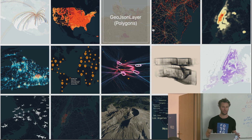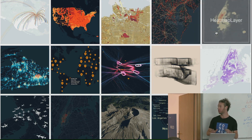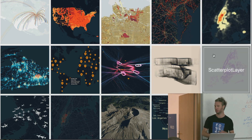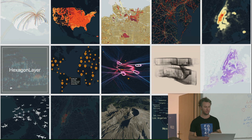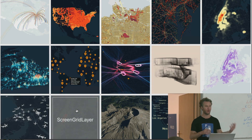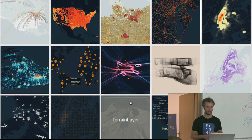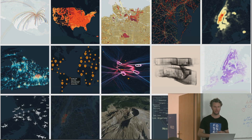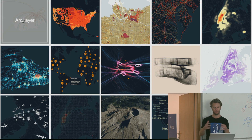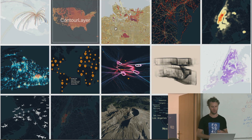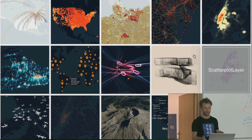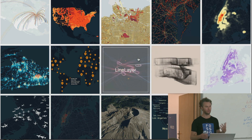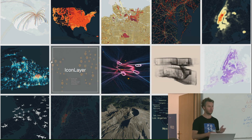Here's just a couple of the layers that we have that you can use on the website, so you can see it's quite varied. Some are more data viz style things like lines and polygons on a map, but we also have a 3D layer and a point cloud layer — we can do a lot of different things.